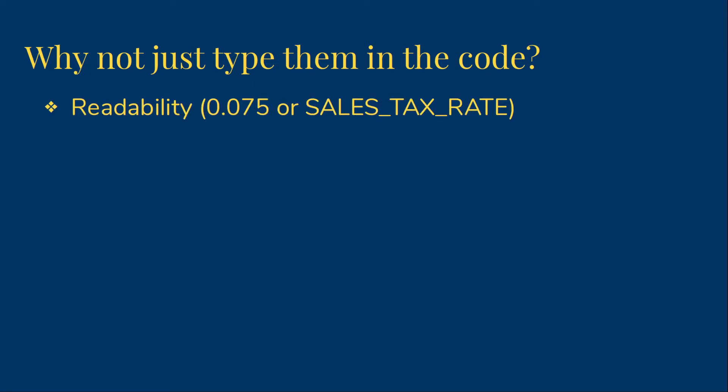The first reason is readability. If I'm looking at a line of code and I see the value 0.075, I don't know for sure what that means. The context might make it clear, but sometimes it doesn't. On the other hand, if I see sales tax rate, I know exactly what that means. I will have to look elsewhere to see what that value actually is, but most of the time I don't need to know the actual value.